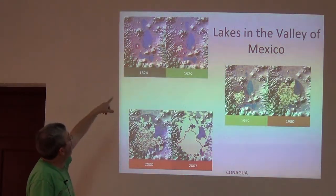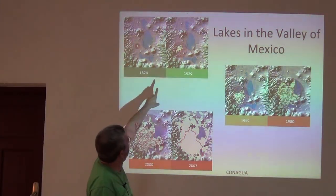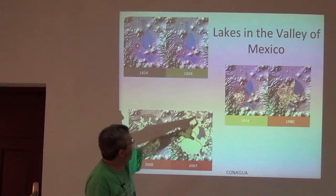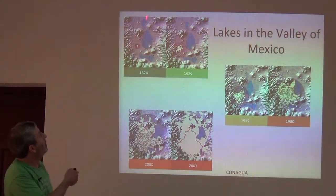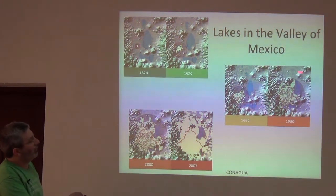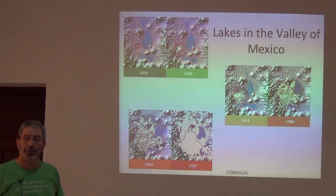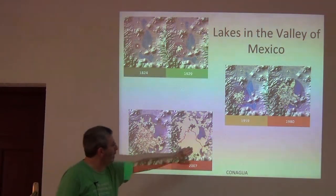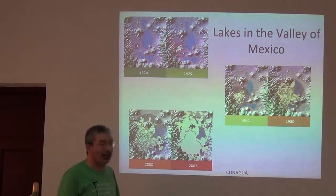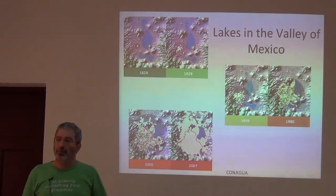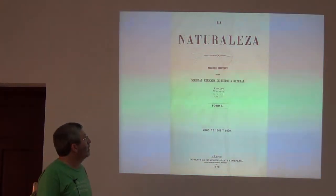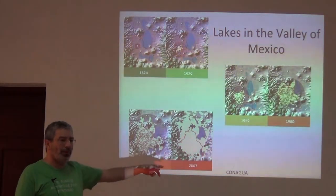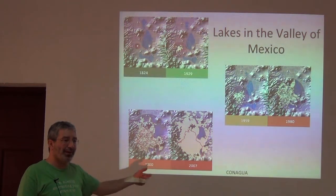You can see between 1824, 1929, 1959, 1980, up to present, the extent of those lakes diminishing progressively. Now really it's only this lake down in the south that you can really see. And that's the — what do you guys call it — Ajolote?